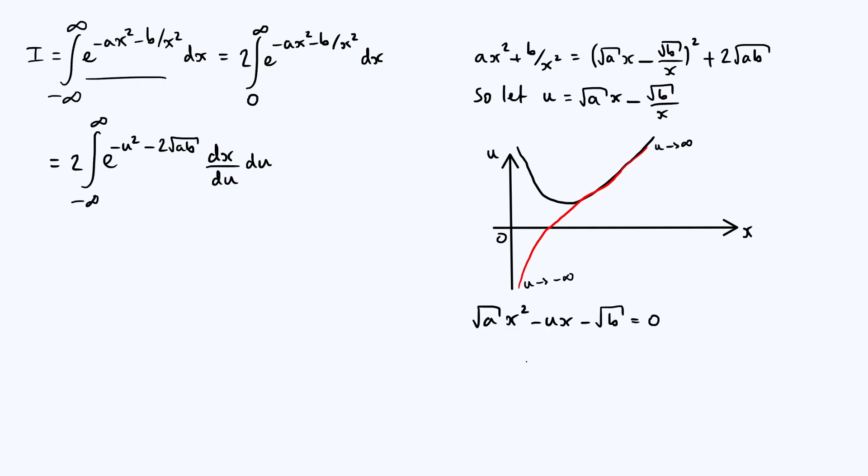Then you can just solve that using whatever method you like. We can just plug it into the quadratic formula, for example, and get x is u, let's put plus or minus here for the time being, so plus or minus the square root of, it'll be u squared, minus 4 times root a times minus root b. So we're going to end up with plus 4 root ab, and then the whole thing is going to be divided by 2 root a.